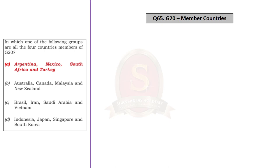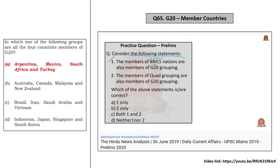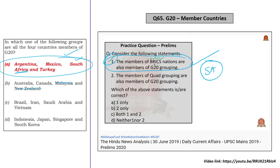Question 65 in Set A is about members of the G20 grouping. We discussed G20 on 29th and 30th June 2019 in the News Analysis. There are many multilateral groupings around the world and it is difficult to remember all members. On 30th June 2019, we compared the members of G20 with the members of BRICS, and saw that all BRICS members are members of G20 — so South Africa is also a member of G20. If you know this, you can easily arrive at the correct answer, Option A, because in Option B, Malaysia and New Zealand are not members of G20; in Option C, Iran and Vietnam are not members; and in Option D, Singapore and South Korea are not members of G20.